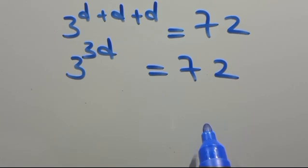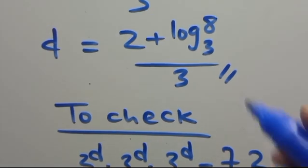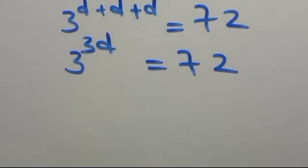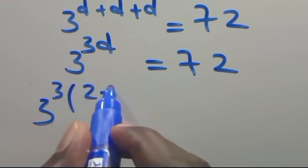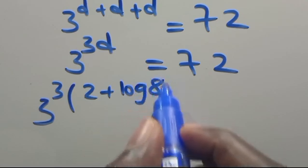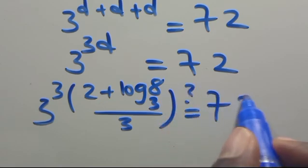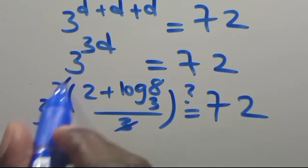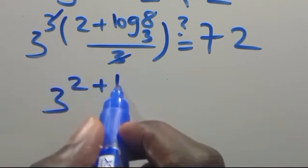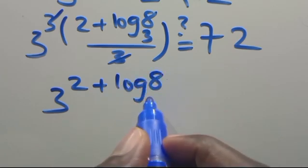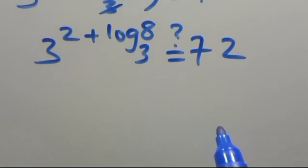When we substitute the value of D that we found, we have 3 to the power of 3 times open parenthesis 2 plus log 8 base 3 over 3, close parenthesis. This gives us 3 to the power of 2 plus log 8 base 3, which should equal 72.